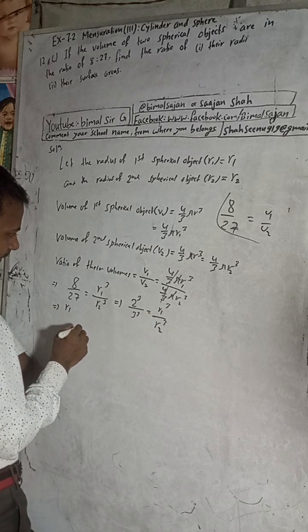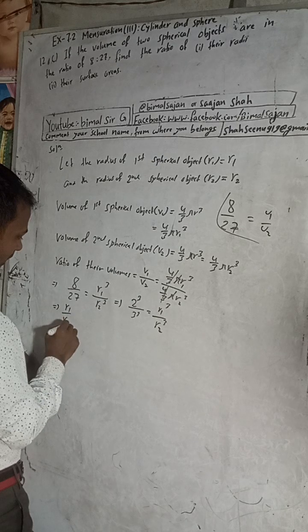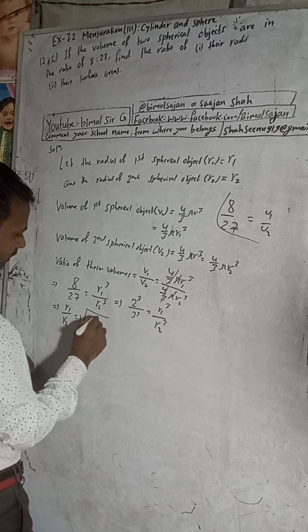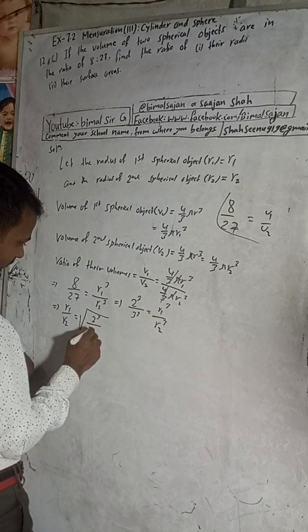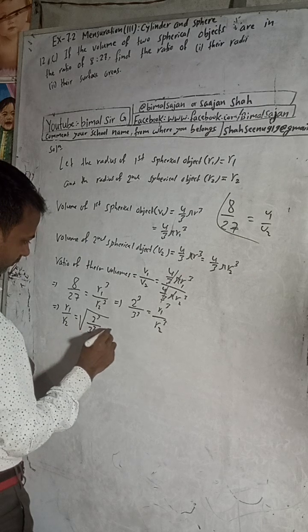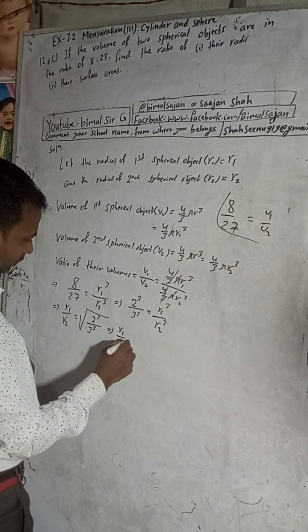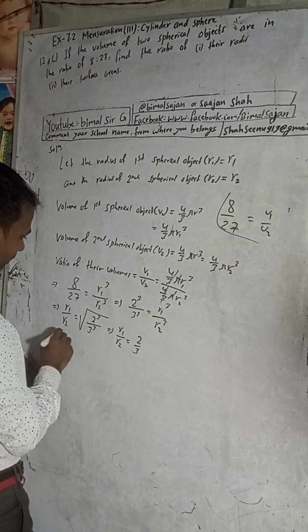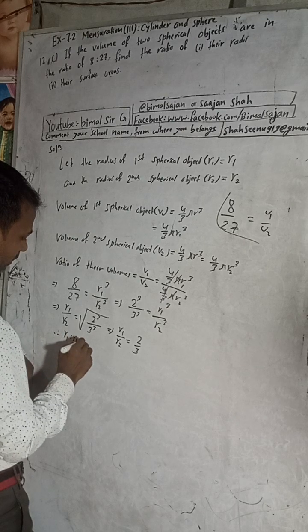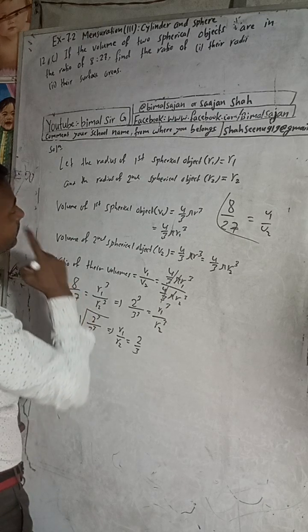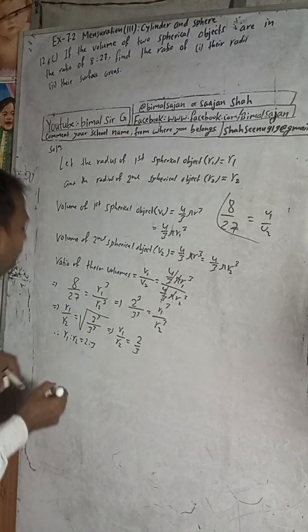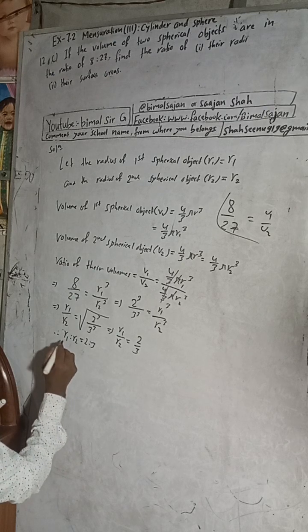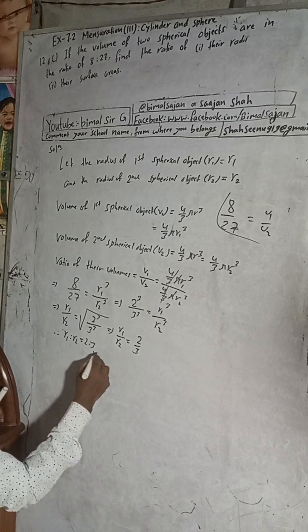So R1 cubed by R2 cubed equals 8 by 27. This can be written as R1 cubed by R2 cubed equals 2 cubed by 3 cubed. This implies that R1 by R2 is equal to 2 by 3. Therefore the ratio of the radii R1 to R2 is equal to 2 is to 3.